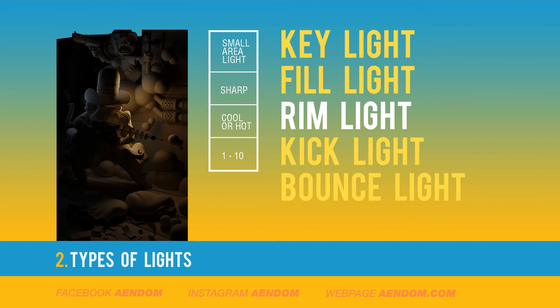With the rim light you separate the principal object from the background. To achieve this you need to put the light behind the object. In this case I use a small area light so it can give me a sharp shadow. I use a hot light on the right part and a cool light on the left part, also with a low intensity between 1 and 10.